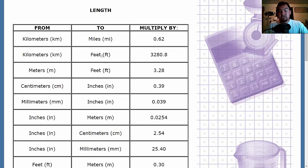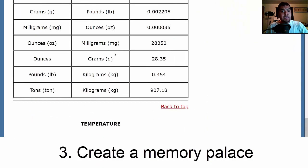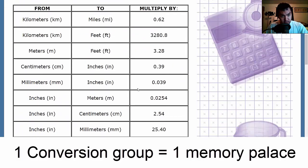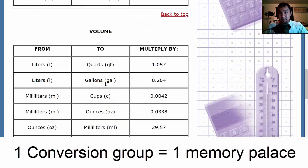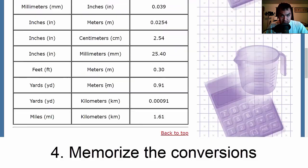Now the third thing I would do is I would create a memory palace because as you can see they're in different tables, right? So I would have a palace per table and then I would actually start memorizing the information. So the next step would be to actually memorize the information.